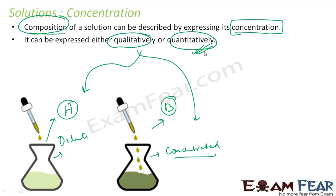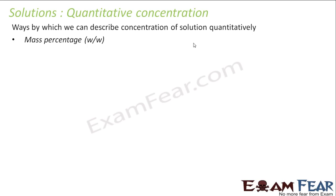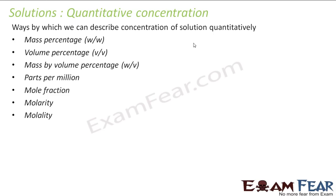So there has to be a quantitative way to express the concentration. There are two ways: one is the qualitative way where we say dilute or concentrated with no fixed numbers, and the other is the quantitative way, which is a better method. The quantitative ways include: mass percentage, volume percentage, mass by volume percentage, parts per million, mole fraction, molarity, and molality. We will go through these one by one.